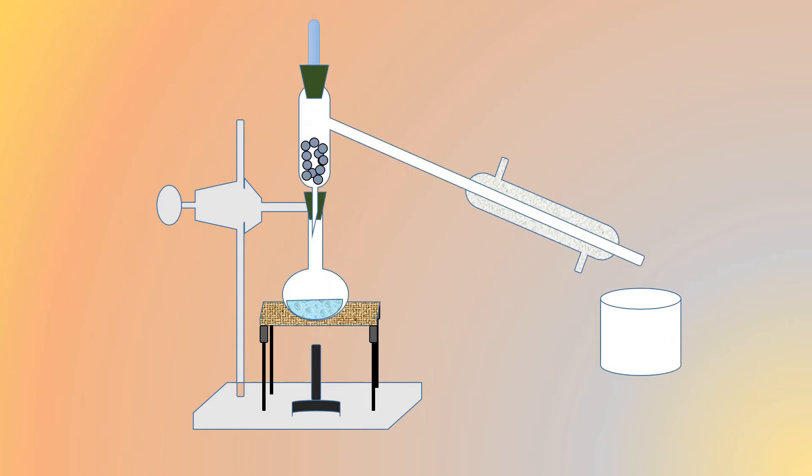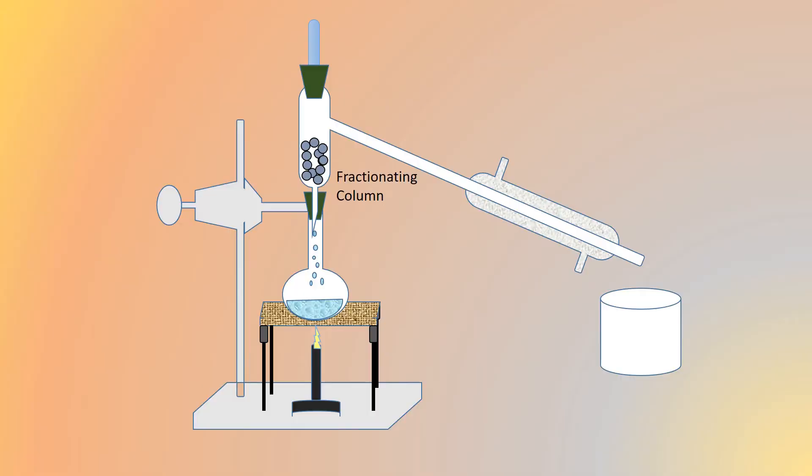In fractional distillation, the difference is the use of a fractionating column. Fractional distillation is generally used when the boiling point difference is less than 25 Kelvin. The fractionating column contains glass beads that provide surface area for vapors to cool down and condense repeatedly, improving separation.